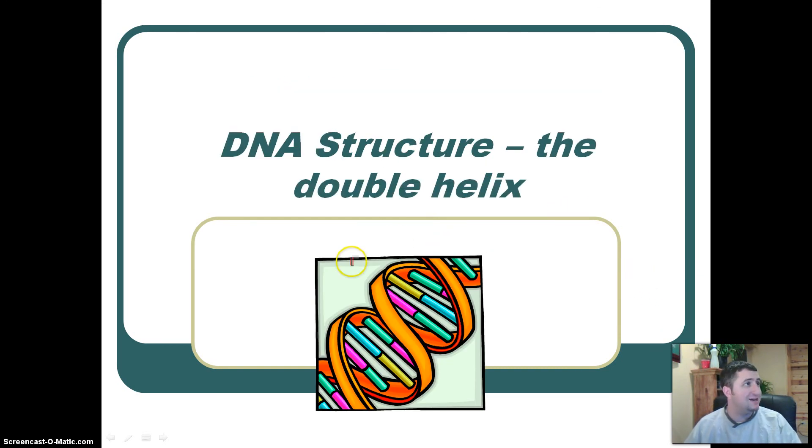So DNA is a double helix, that means it has two things that come together and they sort of twist, kind of like a slinky, only we have two on each side.